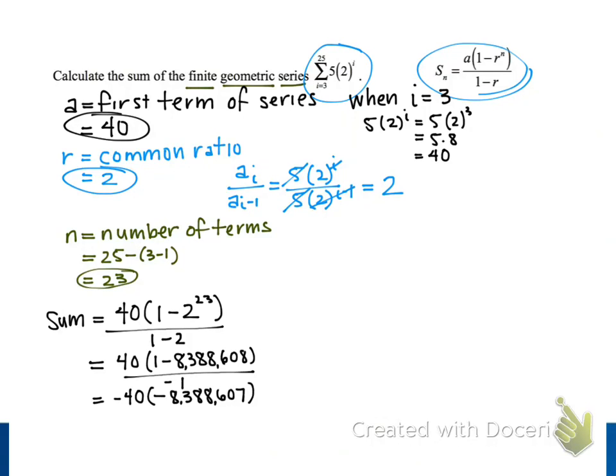When we multiply these two negative numbers together, we get a positive result. And that positive result is the impressive 335,544,280. So this final result is the sum of our finite geometric series, the sum from i equals 3 to 25 of 5 times 2 to the i-th power.